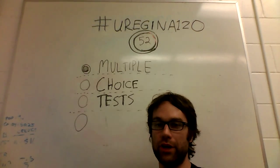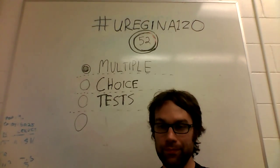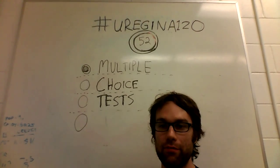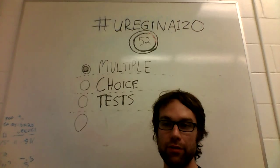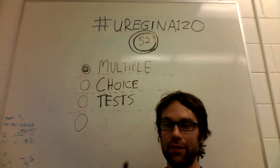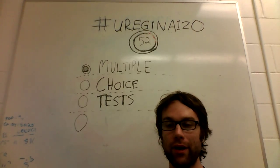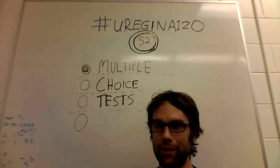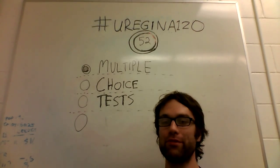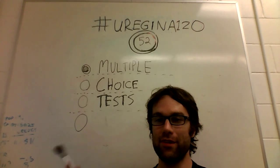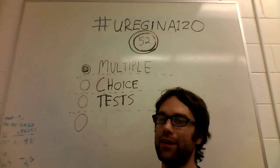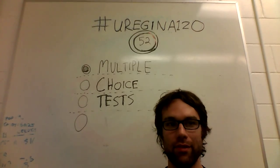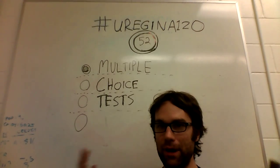Welcome back to URegina 120. I am Jeff Cliff, and this is a series of 120 videos of things that I learned as a student at the University of Regina that I think you should know. Today we're not going to be talking about a logical fallacy — that's most of the list — but this is an example of something I learned that is not a logical fallacy. What it is, is multiple choice tests.